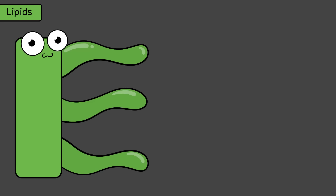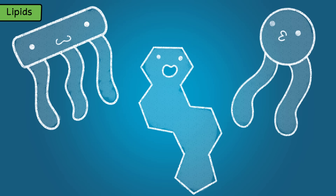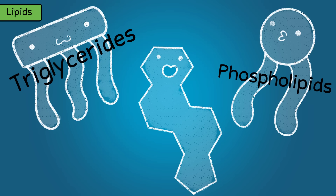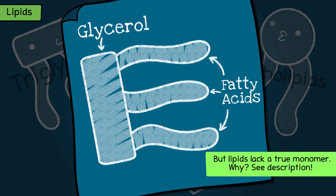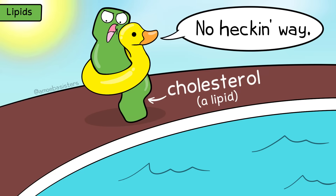Next up, lipids. Lipids include fats and oils. Examples of food sources could include butter or olive oil. This is a seriously diverse group, meaning there are a lot of types of lipids—there are triglycerides, there are phospholipids, there are steroids; these are just some examples. Most, but not all, lipids have building blocks of glycerol and fatty acids. One thing that lipids generally share is that they're hydrophobic, or at least contain a significant hydrophobic component—meaning lipids generally won't dissolve in water, whereas the other biomolecules generally will.